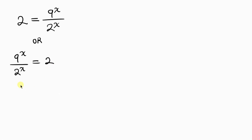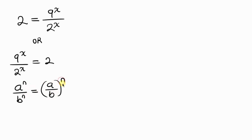We now apply the law of indices that says a to the n over b to the n is the same as a over b, all raised to the common exponent n. Applying this to the left hand side, the expression becomes 9 over 2, all raised to the x, equal to 2.